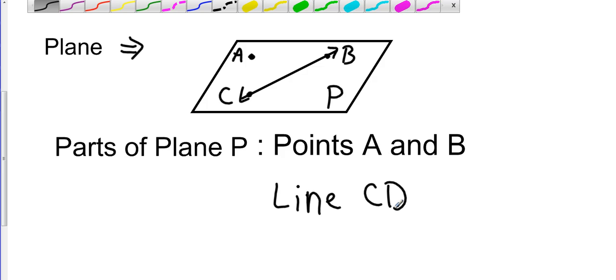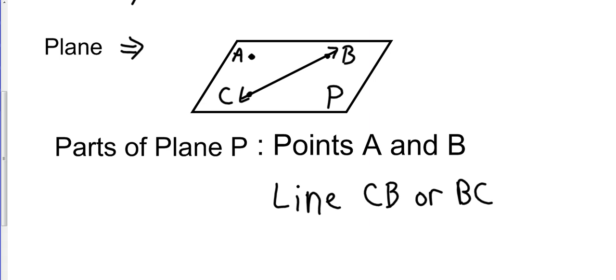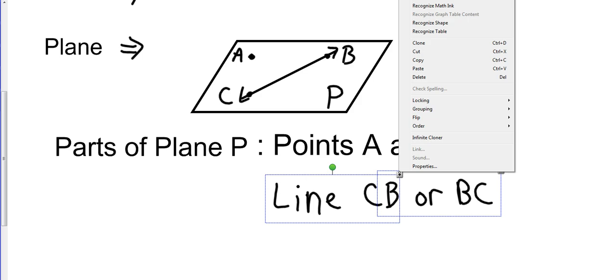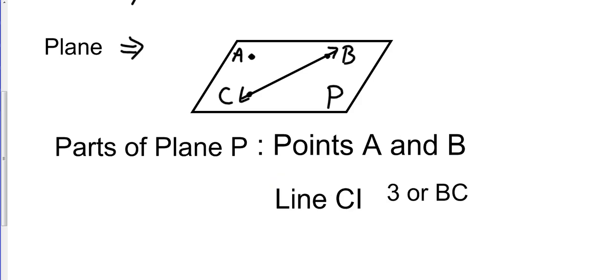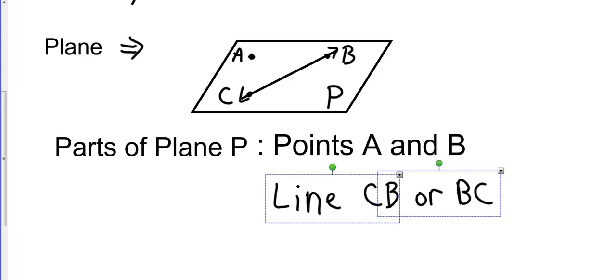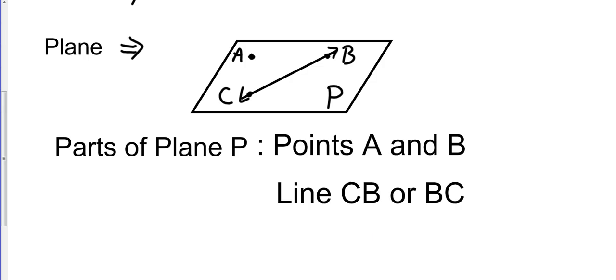Not CD. Excuse me. Again, you could label that BC as well. So I've got points A and B and line CB, or BC, just depending on how you label it. Again, either is correct.